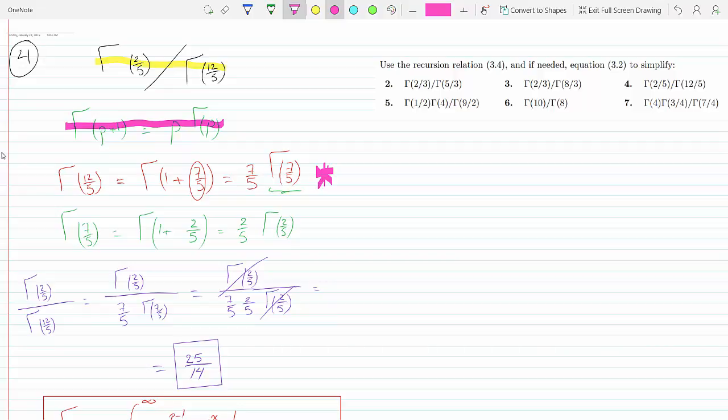And now I just plug in into the original question. So gamma 2/5 is just gamma 2/5, and gamma 12/5 became 7 over 5 times gamma 7 over 5. And gamma 7 over 5 is just 7 over 5 times 2 over 5 times gamma 2/5.